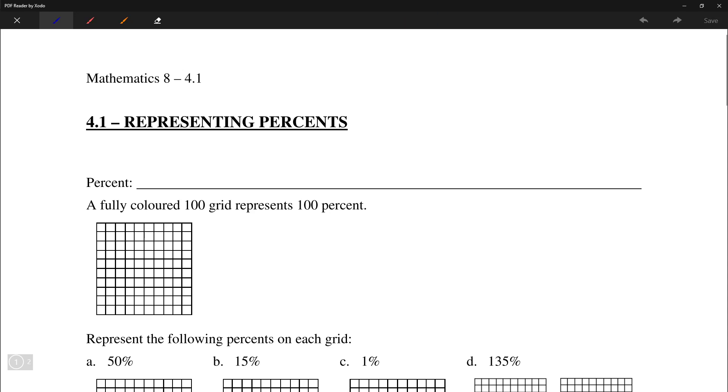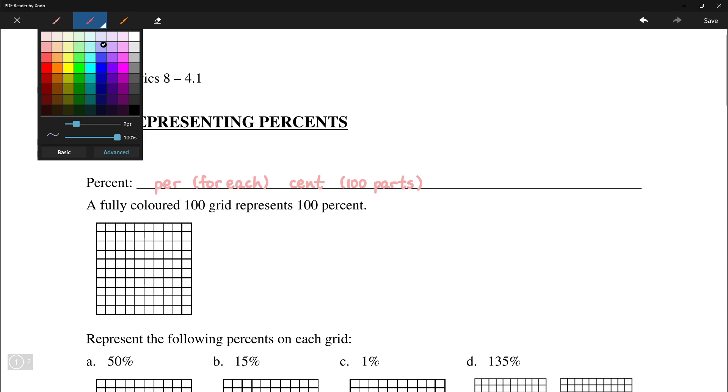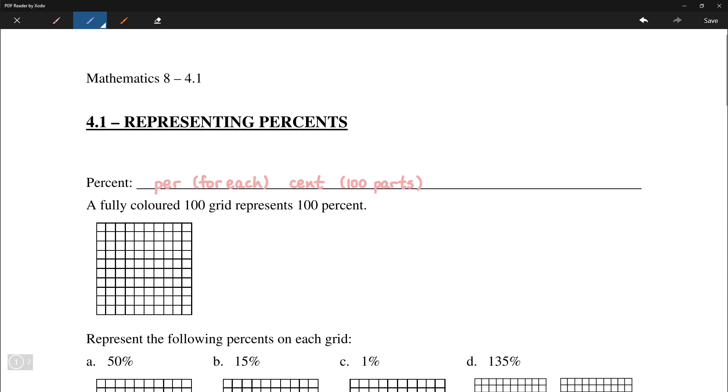So first, a percent is made out of two parts. The first part is per, which can mean for each. And the second part is cent, which has to do with 100 parts. So taken together, percent means something out of 100.